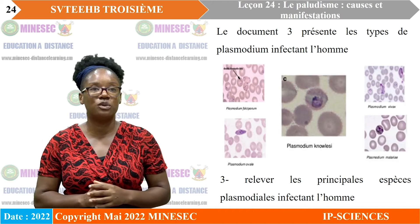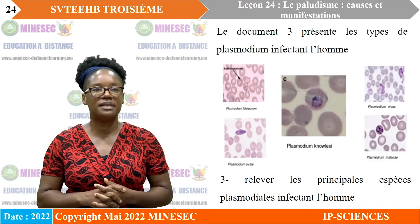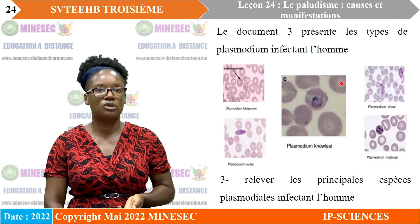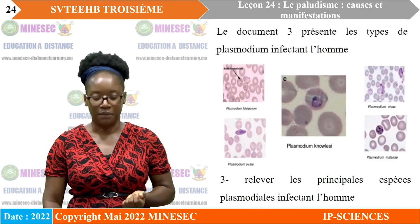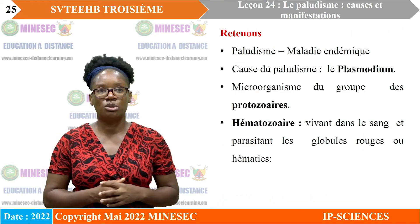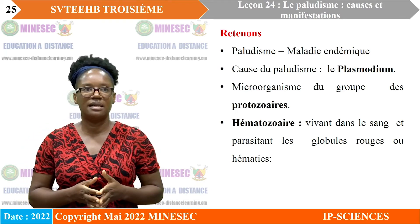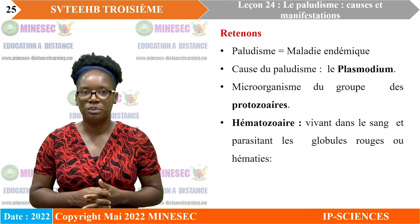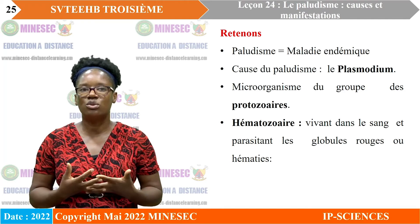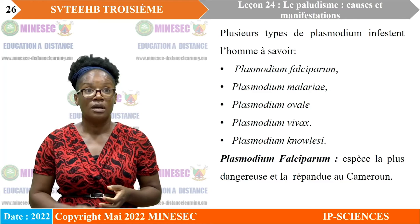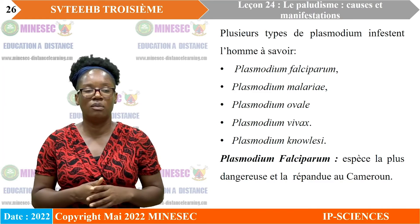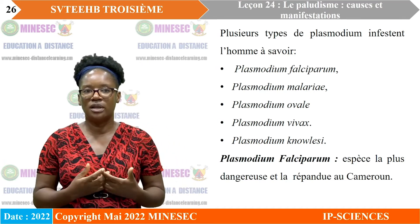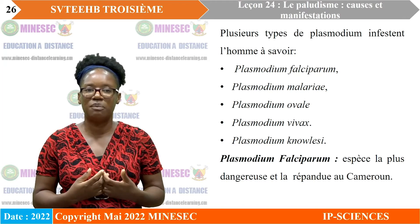Un troisième document présente les types de plasmodium infectant l'homme : le plasmodium falciparum, le plasmodium malariae, le plasmodium vivax, le plasmodium ovale et le plasmodium knowlesi. Nous retenons donc que le paludisme est une maladie endémique causée par un microbe du groupe des protozoaires : le plasmodium, qui parasite les globules rouges. L'espèce la plus dangereuse et la plus répandue est le plasmodium falciparum.